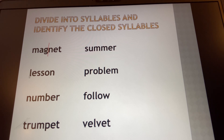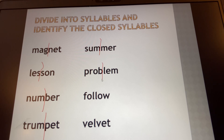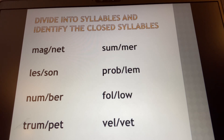Let's start down this side. We have 'les-son' — vowel, consonant, consonant, vowel — with our syllable break here. 'Trum-pet' — vowel, consonant, consonant, vowel — syllable break between the two consonants that are doubled. 'Sum-mer' with the syllable break between the two consonants. 'Prob-lem' with the break between the B and the L. 'Fol-low,' 'vel-vet.' How many of those were you able to identify? Nice job. Here's another example of those same words spaced apart a little bit for you to see.